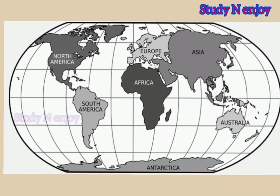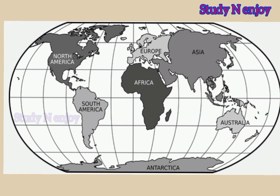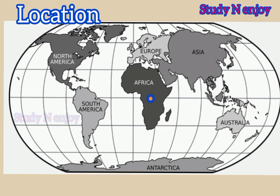The equator passes through the continents of South America, Africa, and Asia. Africa is the second largest continent in the world. The Democratic Republic of Congo is the third largest country in Africa. The DRC is an appropriate example to understand the climatic condition of the equatorial region and its effect on the lifestyle of people, because it lies on both sides of the equator.